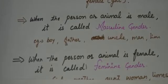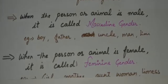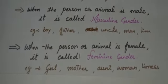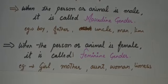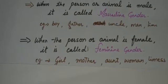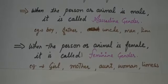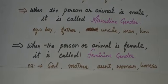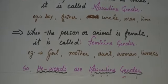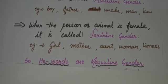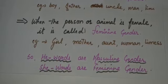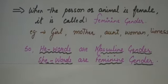When a person or an animal is female, it is called feminine gender. Examples include girl, mother, aunt, women, and lioness. When the person or animal is female, they are called feminine gender. In short, all the 'he' words are masculine gender and all the 'she' words are feminine gender.